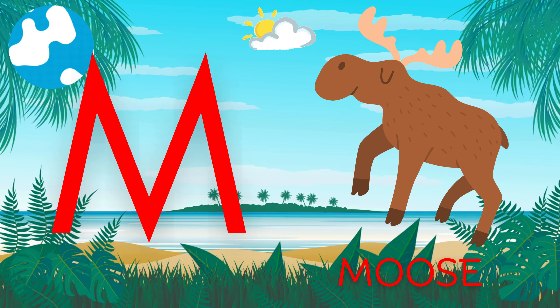M is for moose. M. Moose. M is for moose. M, M, M. N is for newt. N, N. Newt. N is for newt. N, N, N.